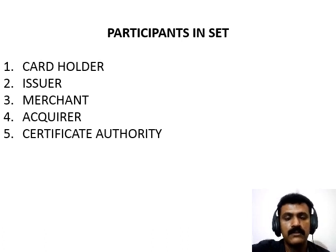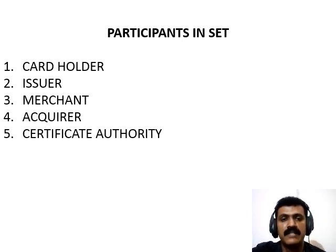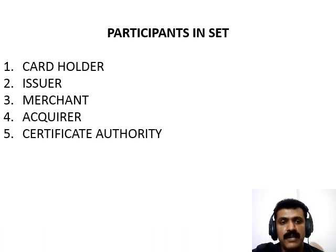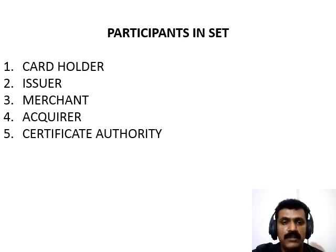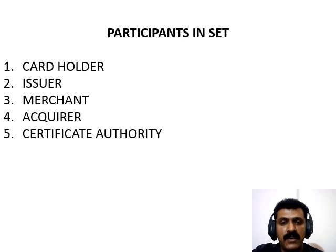Now let us move on to the participants in SET. In the general scenario of an online transaction, SET includes similar participants: Cardholder, that is the customer; Issuer, that is the customer financial institution; Merchant, that is the seller; Acquirer, that is the merchant financial institution; and Certificate Authority, which is the authority that follows certain standards and issues certificates to all other participants.